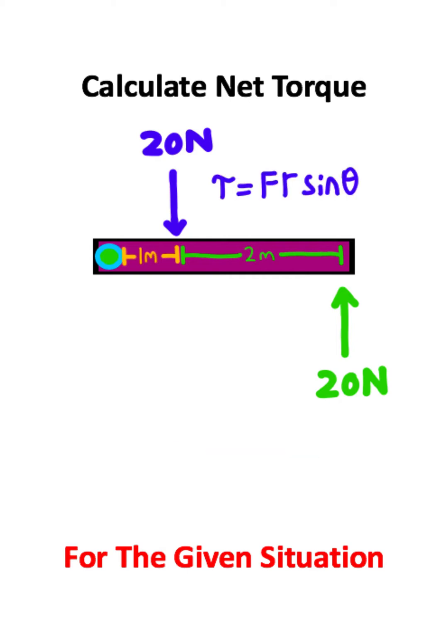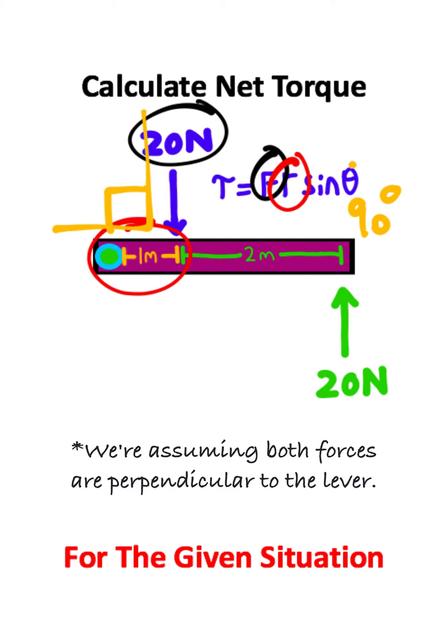I'm going to start by calculating torque for the 20 Newton force we see close to the lever arm. The force is 20 Newtons. The distance from the lever arm is 1 meter. And the angle between the lever arm and force is 90 degrees. Now keep in mind that the sine of 90 is equal to 1. So plugging everything in we'll have 20 times 1 times 1 which is going to be a torque of 20 Newton meters.